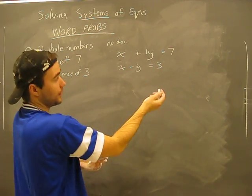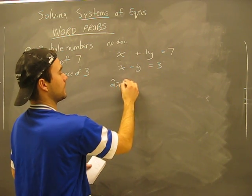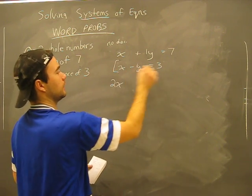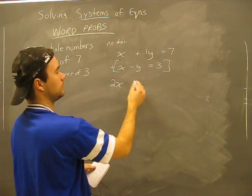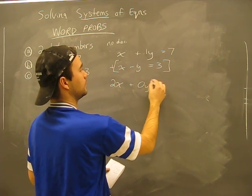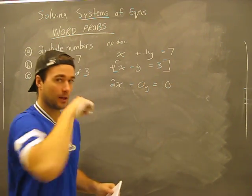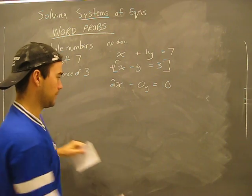I'll combine these here and now I get two x. Two x plus zero y equals ten. I'll track graphically to show you what I'm talking about combining.